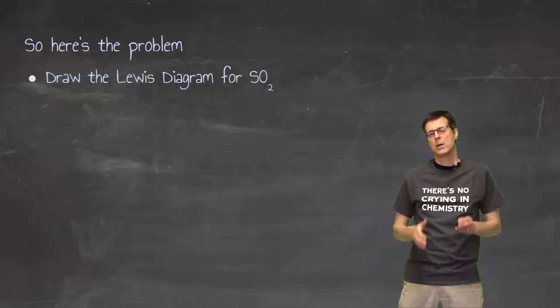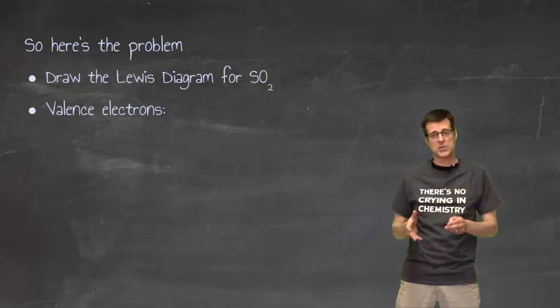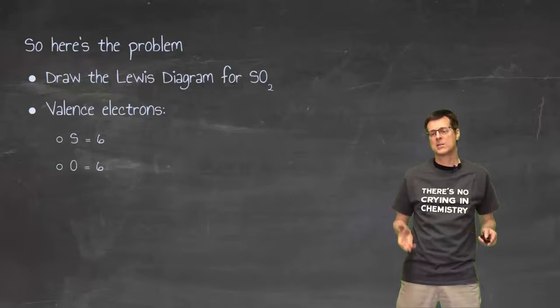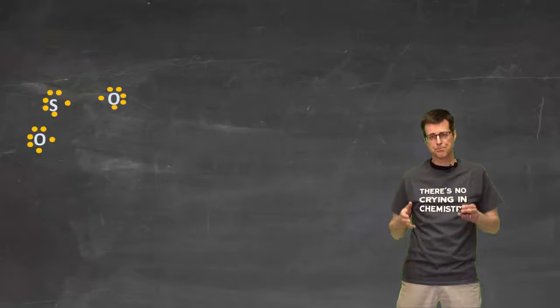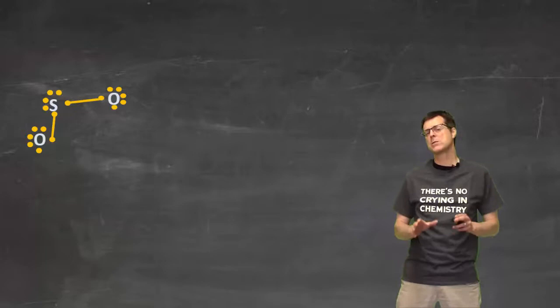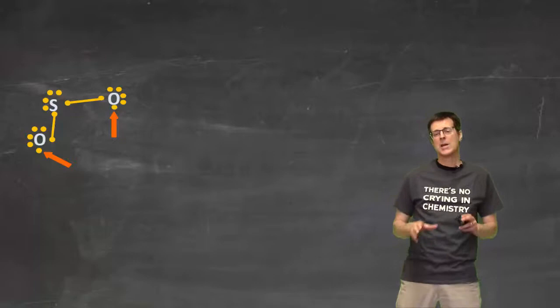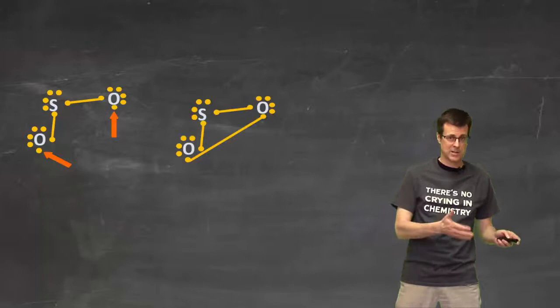If you started this thing using the approach that you've used before, you would have started with the valence electrons. You would have counted up the valence electrons - six for sulfur, and also six for oxygen. You would have arranged those atoms with their valence electrons, and then you would have connected the dots, the single electron to a single electron, to make a full molecule.